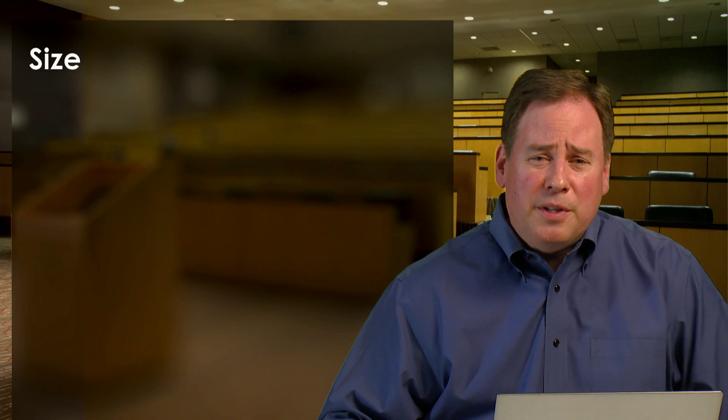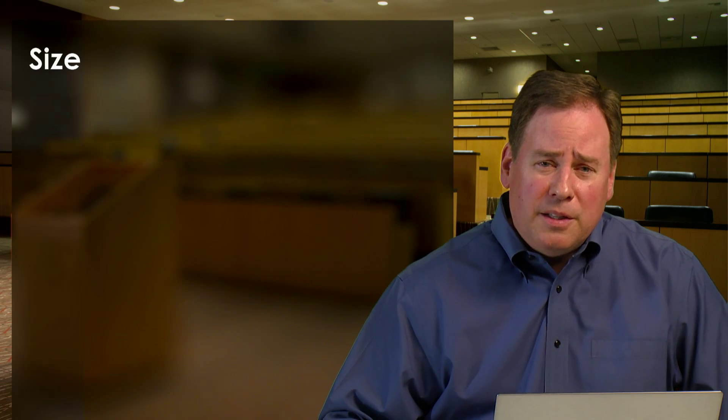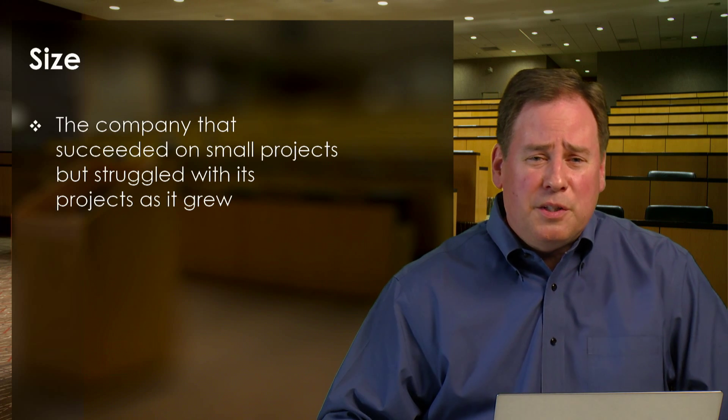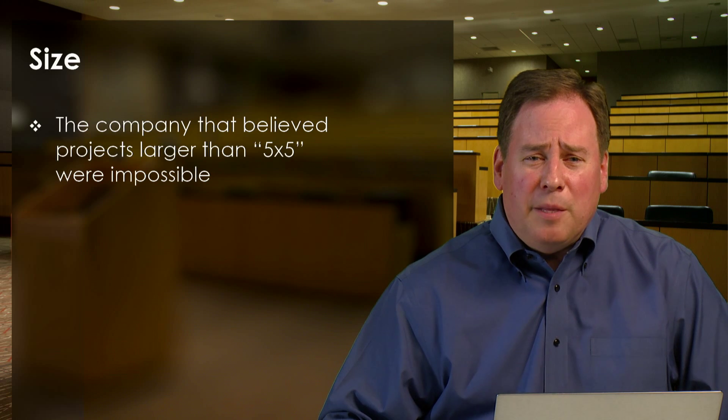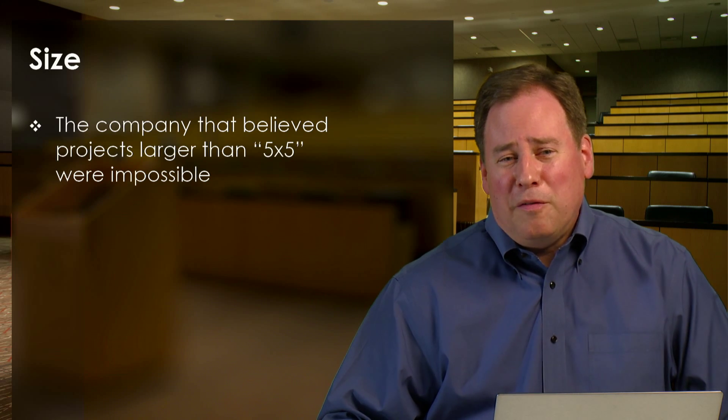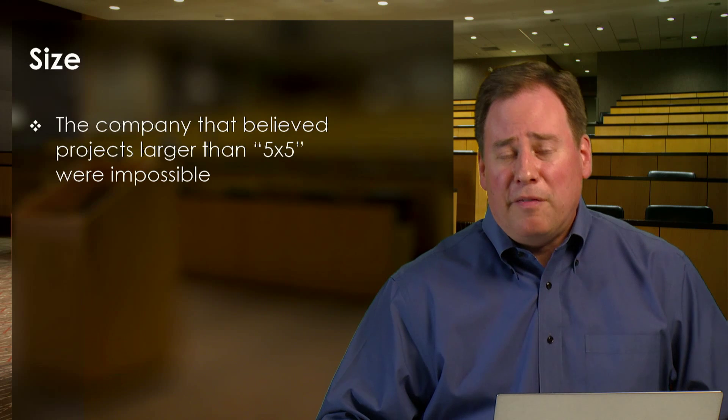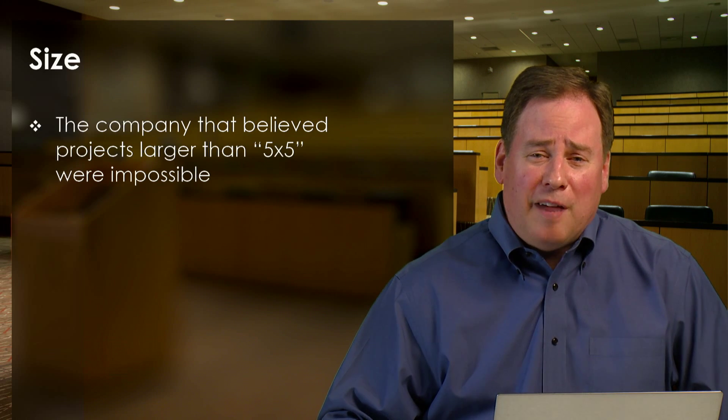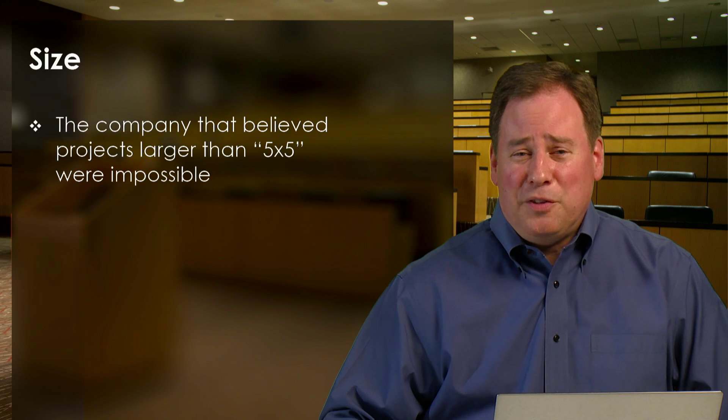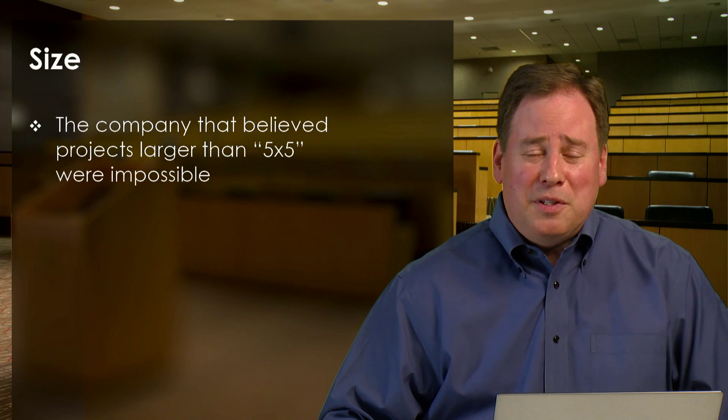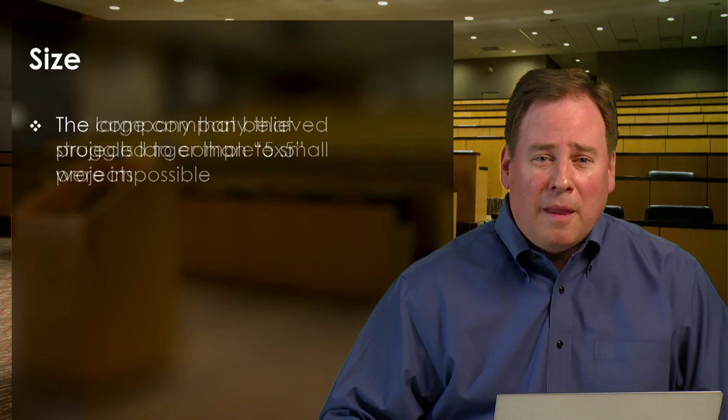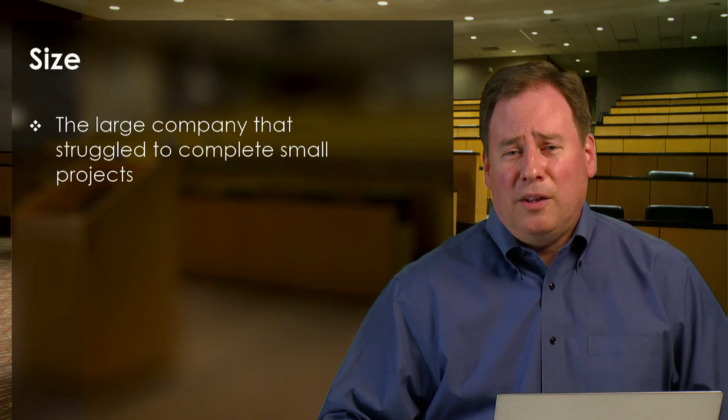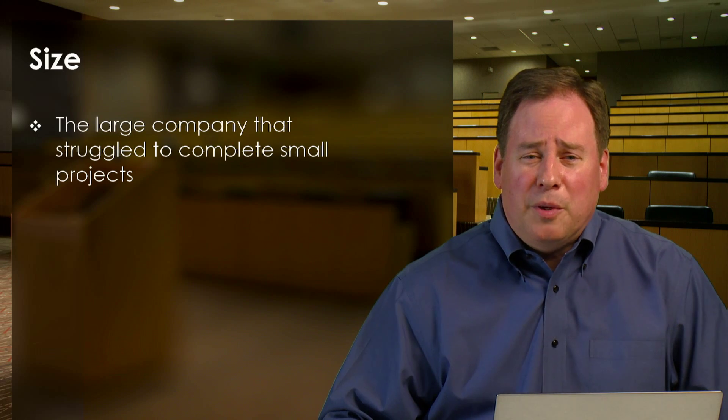We're also going to hear lots of stories. And we'll tell stories in each of the categories. In the size category, we'll talk about the company that succeeded on small projects, but struggled with its projects as it grew. We'll talk about the company that believed projects larger than, quote, five by five were impossible. And what I mean by five by five is five people for five months. And this company was actually a really successful company, but their business model was premised on the idea that they would never do a project larger than five by five. We'll see the story of the large company that did okay on large projects, but actually struggled to complete small projects.